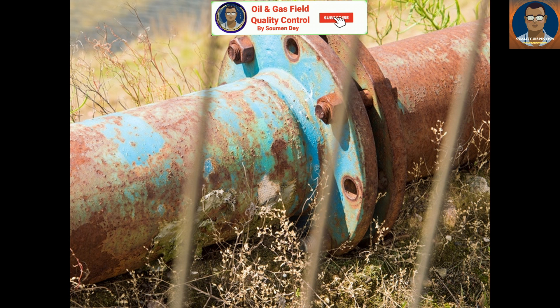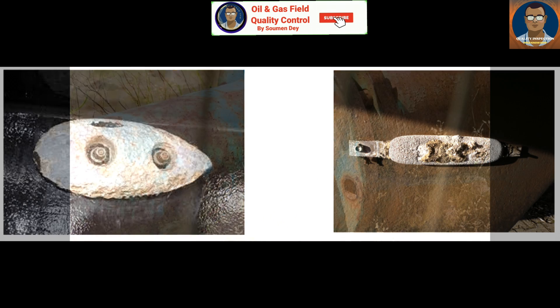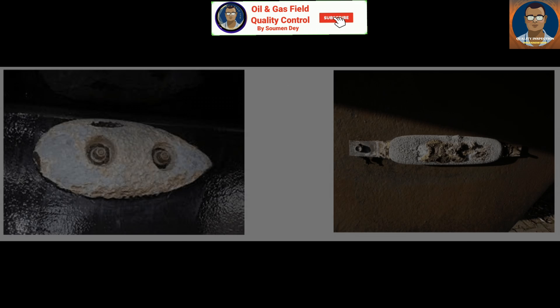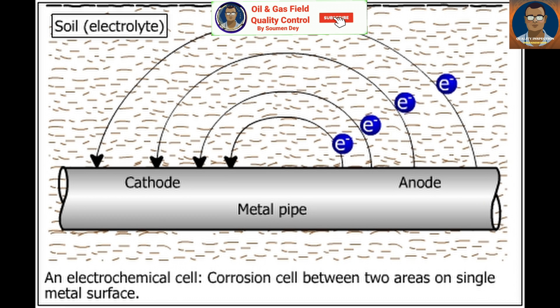Low voltage direct current (DC) flows off the anodic metal into the electrolyte. So anodes get corroded — charged ions are released into the electrolyte and electrons are released into the metal. By convention, DC flow is opposite to electron flow.